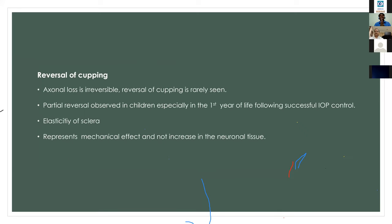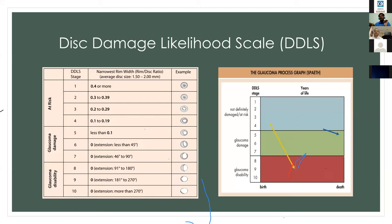Regarding reversal of cupping — axon loss is irreversible, but reversal of cupping can happen only in the earliest stages of life when the sclera is elastic. If high IOP at that time is controlled within a particular period, there is a chance the cupping will reverse. This is only a mechanical effect and not due to addition of neuronal tissue.